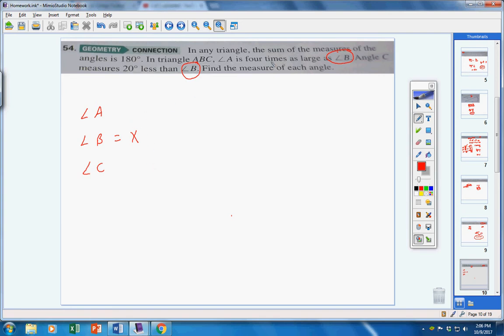Here, angle A is based on B. Angle C is based on B. So, angle B is going to be my X. What's angle A? It's 4 times as large as angle B. So, angle B is X, so 4X. Angle C is 20 less than angle B. So, angle C is angle B, which is X minus 20. Find the measure of each angle. If I take my first angle, plus my second angle, plus my third angle, I'll get 180. My first angle is 4X. My second angle is X. And my third angle is X minus 20.